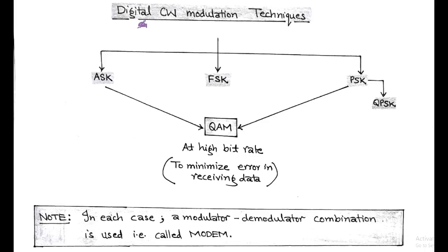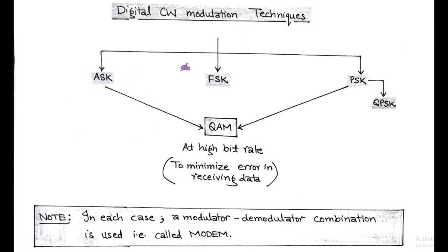Friends, welcome once again in our digital communication course where we are going to discuss digital continuous wave modulation techniques. In the last video lecture, we discussed the waveform comparison between binary ASK, FSK, and PSK. On the basis of classification, digital continuous wave modulation techniques are amplitude shift keying (ASK), frequency shift keying (FSK), and phase shift keying (PSK). PSK is further modified as quadrature PSK, and the combining effect of ASK and PSK is called quadrature amplitude modulation, i.e., QAM.